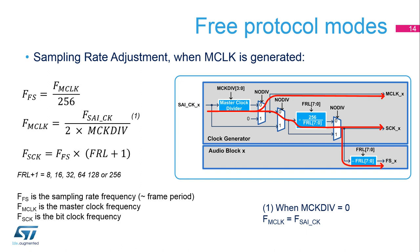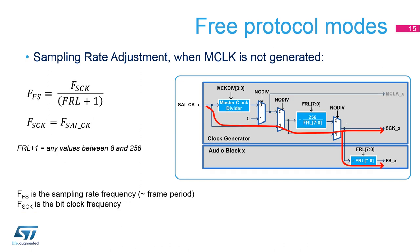The clock generator is needed for master mode communications. It is used to adjust the sampling rate of the serial audio interface. The clock generator provides the root frequency for the MCLK-X, SCK-X, and the FS-X. When the master clock, or MCLK, needs to be generated, the frame length must be a power of 2. The ratio between the FS-X frequency and the MCLK-X frequency is fixed to 256. When the MCLK-X does not need to be generated, the frame length can take any value from 8 to 256.